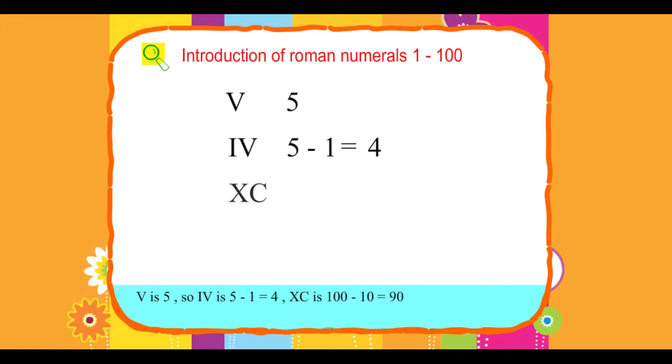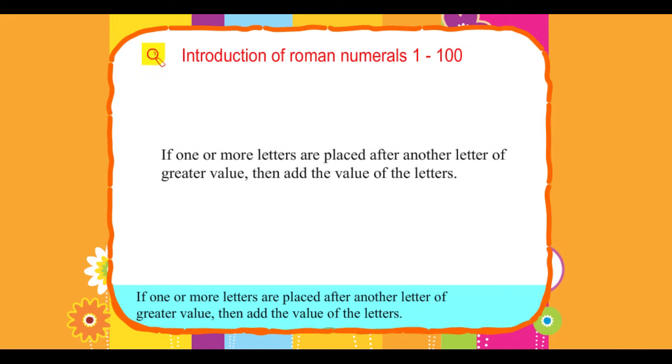XC is 100 minus 10 equals 90. Rule 3: If one or more letters are placed after another letter of greater value, then add the value of the letters.